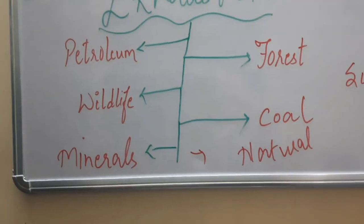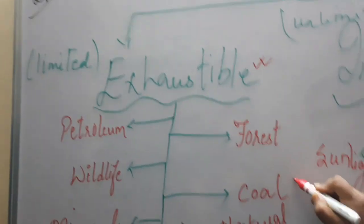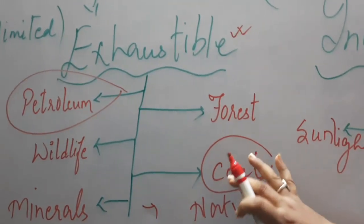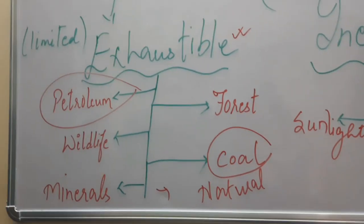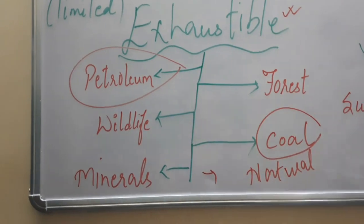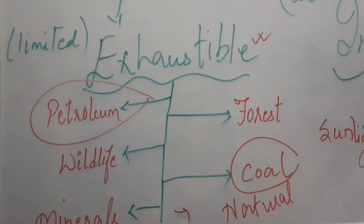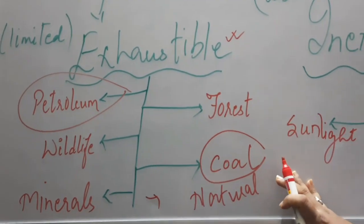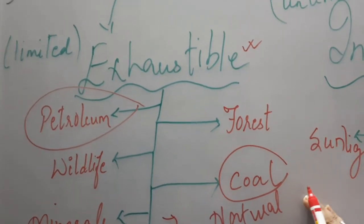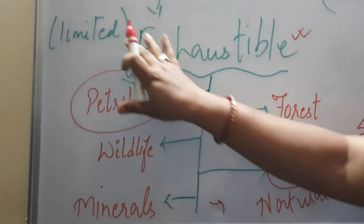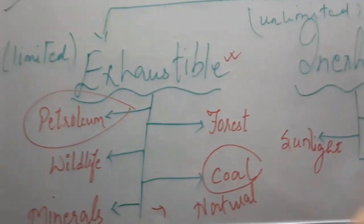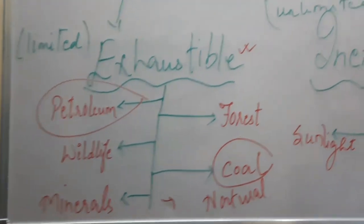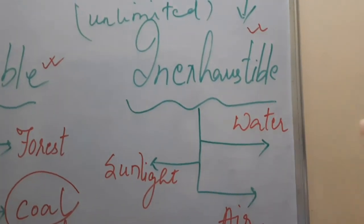So coal and petroleum are limited. Their formation takes place over millions of years — coal is deep inside the earth, formed from dead decaying matter of plants, and petroleum is deep inside the sea, formed from dead decaying matter of animals. Because they are limited, we have to be very alert when using these particular fuels. Next we come to inexhaustible — unlimited in quantity.